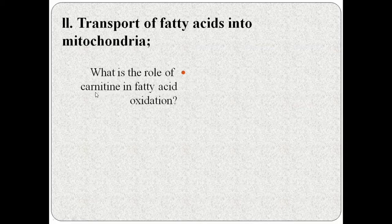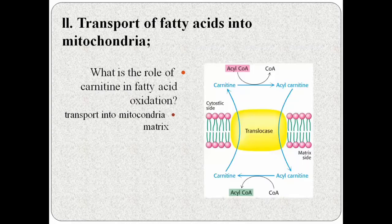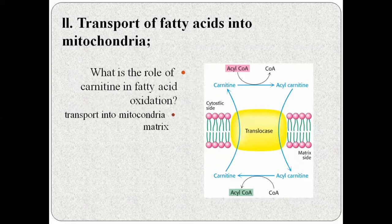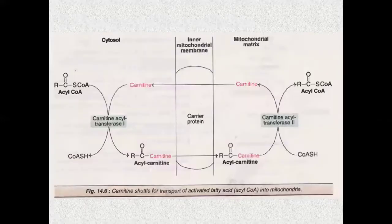We call this transport mechanism carnitine. So carnitine is used to transport the activated fatty acid inside the mitochondrial matrix. There is a specific mechanism: first, the fatty acid will be converted into acyl-carnitine, and then it is transported into the matrix. Let's see this mechanism in detail — how we use the carnitine shuttle to transport acyl-CoA, the activated form of fatty acid.